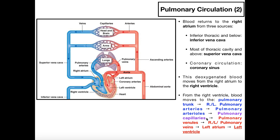To do gas exchange, oxygen must move from the alveoli into the capillaries, and carbon dioxide must move from the capillaries into the alveoli — they move in opposite directions, which we'll see in a later video. At the level of the pulmonary capillaries, that's where gas exchange occurs: we get oxygen back into the blood and remove the carbon dioxide.